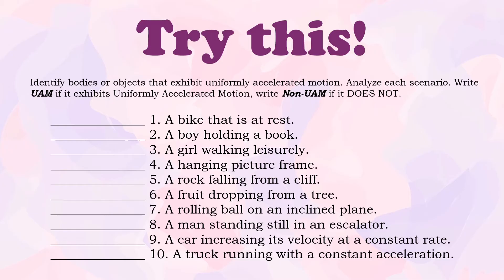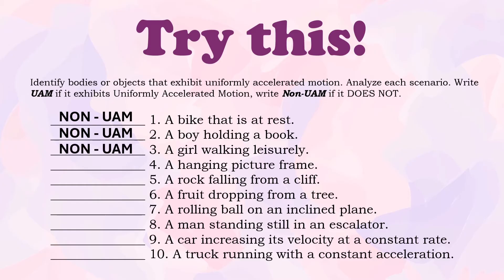Let us check the correct answers. Number one: a bike that is at rest — the answer is Non-UAM, since it is not moving. Number two: a boy holding a book — Non-UAM. Number three: a girl walking leisurely — this is also non-uniformly accelerated motion.